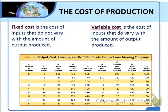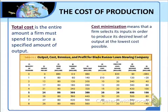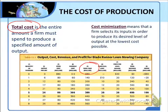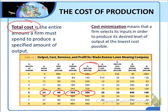A firm's total cost is the entire amount the firm must spend to produce a specified amount of output, found by adding the firm's fixed cost to its variable cost. Blade Runner's total cost is reported in column five of this table. For example, the total cost of mowing 24 lawns would be $80 in fixed cost plus $300 in variable cost, which would equal $380 in total cost.